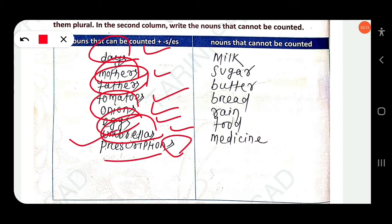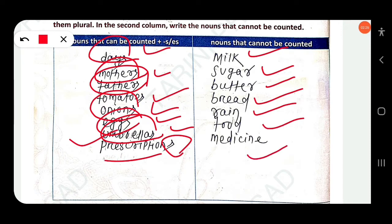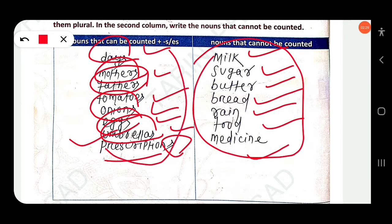The nouns that cannot be counted are: milk, sugar, butter, bread, rain, food, and medicine. These are uncountable nouns, and the others listed above are countable nouns.